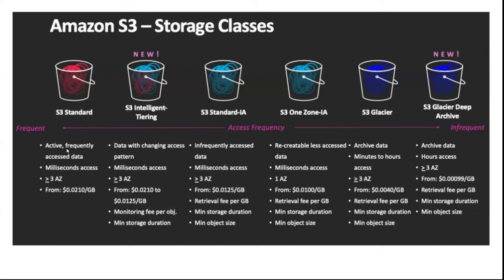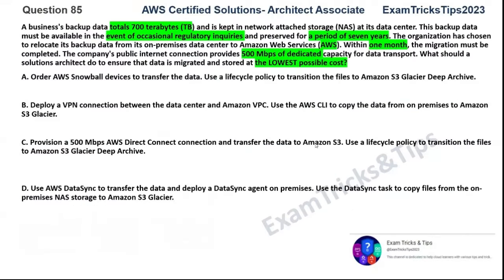Looking at this chart showing the different types of S3 storage classes: S3 Standard is on the left and S3 Glacier Deep Archive is on the right. Moving from left to right, the cost reduces, but other parameters change as well. Services on the left are highly available across three AZs, whereas on the right you have reduced availability. Access time also changes — from millisecond access on the left to minutes for Glacier and hours for Glacier Deep Archive. With that background in mind, let's look at the actual problem options.